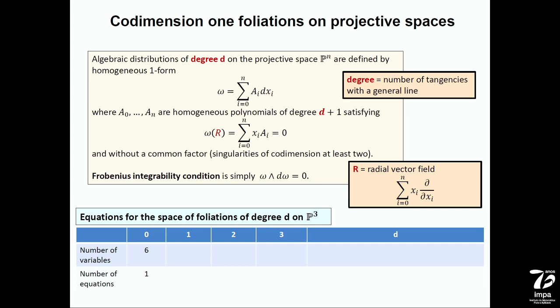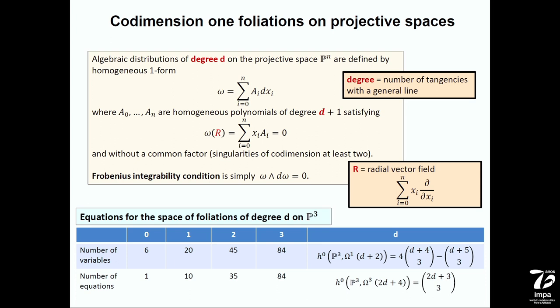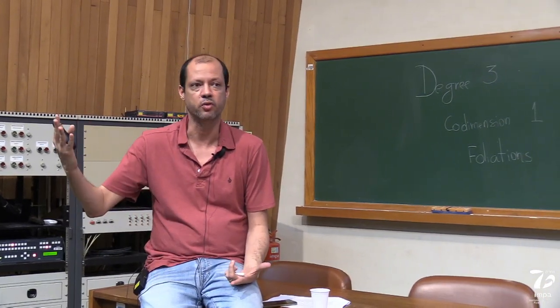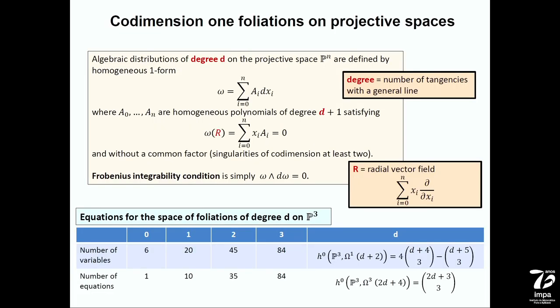This space of foliations sits inside a certain projective space. The dimension is the number of variables minus one, defined by a certain number of equations. When the degree grows — starting from degree zero, where we have just one equation, essentially a Grassmannian of lines in P^3 — as the degree grows, you have more equations and more space. Algebraically, it's a complicated problem. Already for degree three, just putting the equations on a computer takes a lot of memory, and to manipulate them doesn't seem very feasible. But it's considerably easier — orders of magnitude less — than what happens for the center-focus problem.